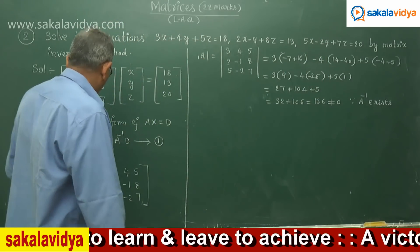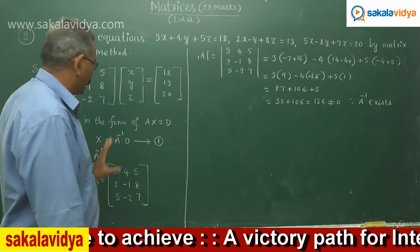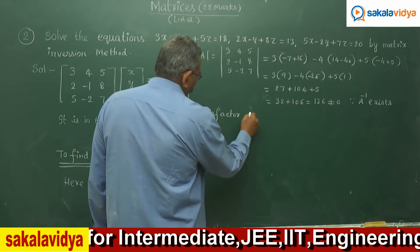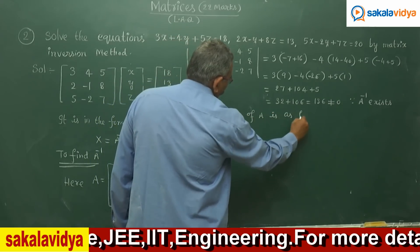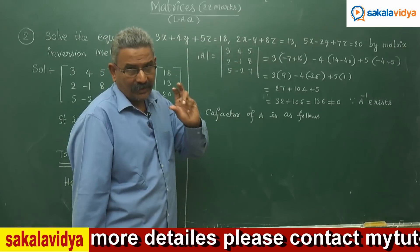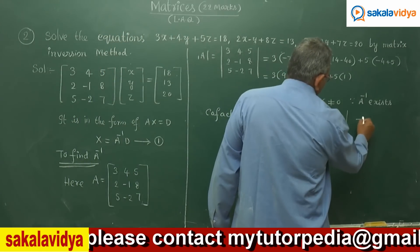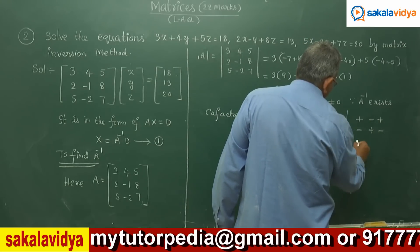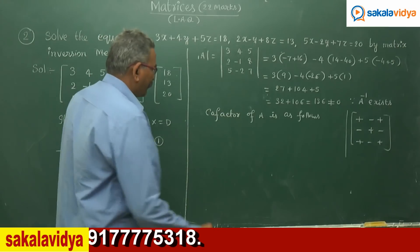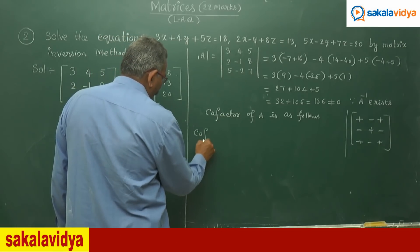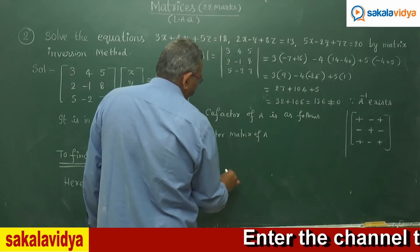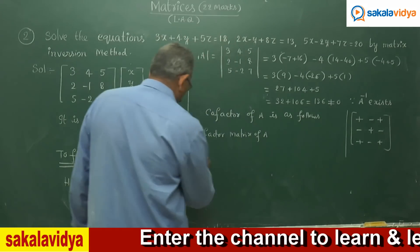To find A inverse, first let us write the cofactors of all elements of A. Before writing the cofactor matrix, we must remember the sign scheme: plus, minus, plus / minus, plus, minus / plus, minus, plus. Let us keep this sign scheme in mind while writing the cofactor matrix of A.